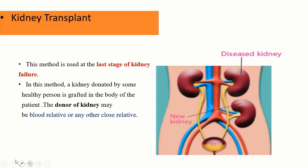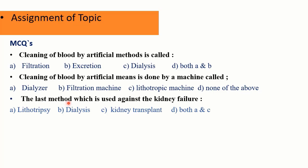MCQ 1: Cleaning of blood by artificial method is called — option A: filtration, B: excretion, C: dialysis, D: both A and B.